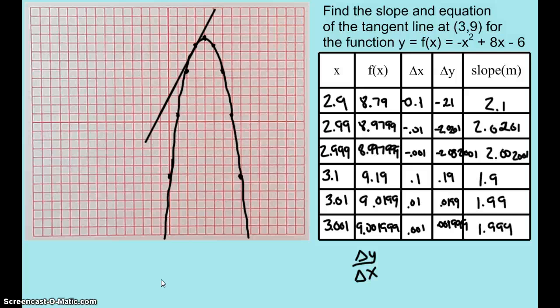By looking at the table, I think that we can tell as x approaches 3 from either direction, the slope keeps on getting closer and closer to 2. So intuitively, right now, we're just going to say that the slope at 3 is going to be 2. Now we'll go ahead and find an equation of the tangent line that has a slope of 2 going through the point (3,9).